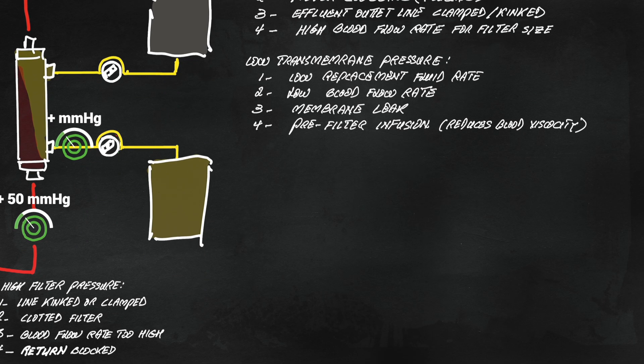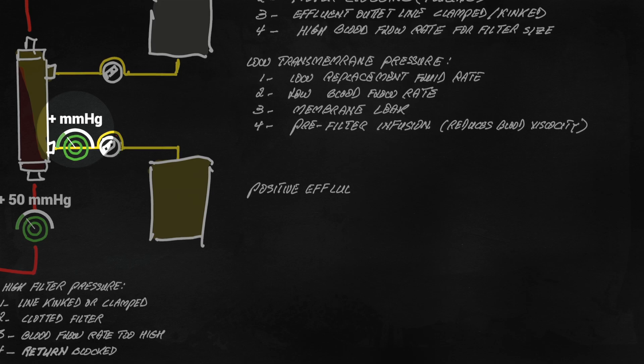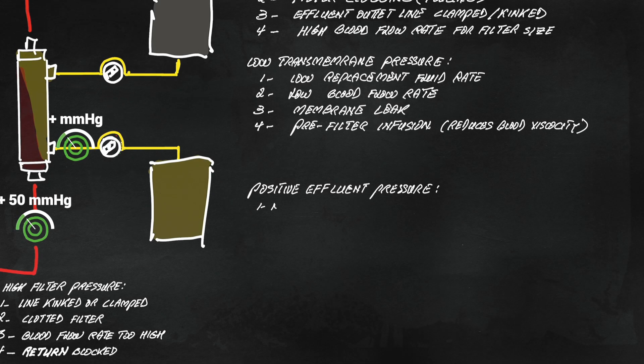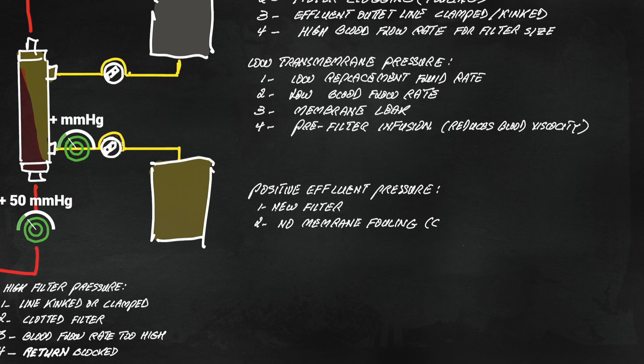Effluent pressure can be positive or negative. It is usually positive with a new membrane, which are typically high flux, meaning that they have high ultrafiltration coefficient, which in turn means that plasma water passes through easily.